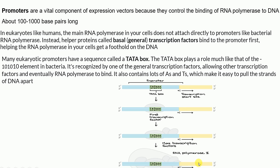So the promoter is the region of DNA where transcription factors and RNA polymerase bind, present upstream of the gene on the 5' side. The TATA Box contains A-T double bonds which are weak bonds, making it easy to pull the DNA strands apart — unlike G-C triple bonds which are strong and hard to pull apart.